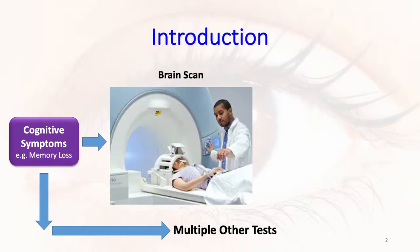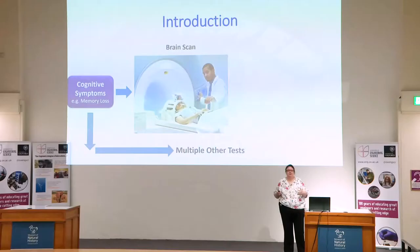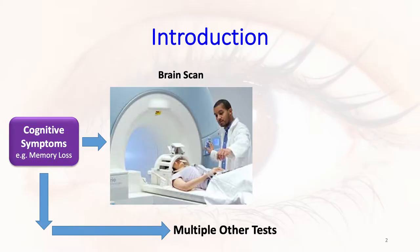Imagine you have some cognitive symptoms, such as memory loss. You might go through multiple tests, see different clinicians. You might go for an MRI test. You could be on a long waiting list. And of course, when you've got some symptoms, you really want to know what the diagnosis is, otherwise it can be quite worrying if it's prolonged.